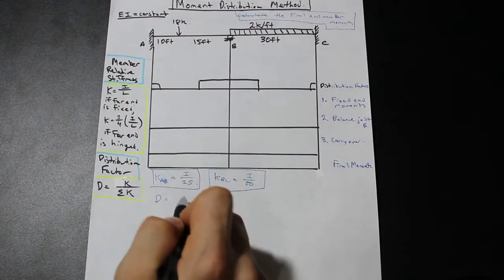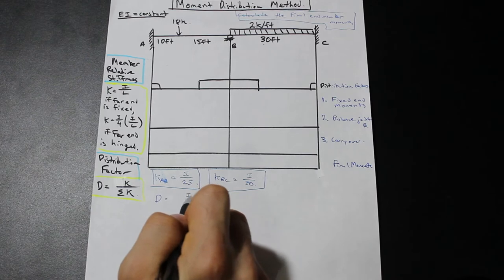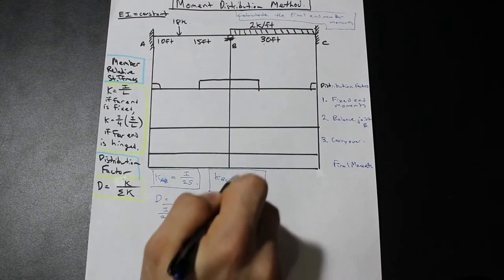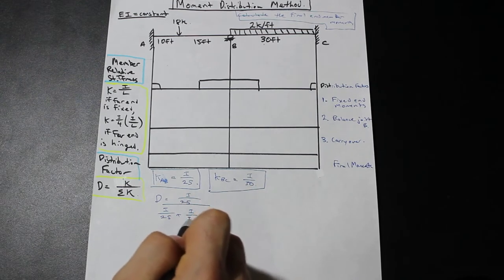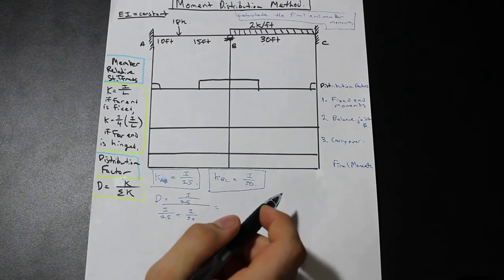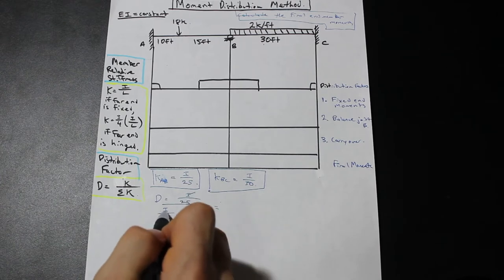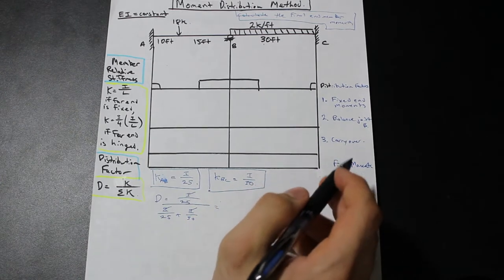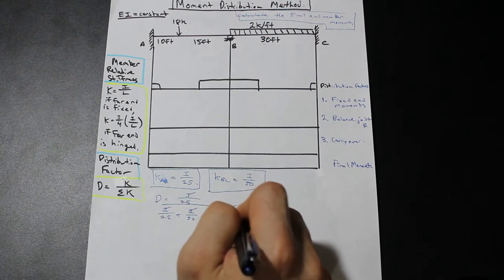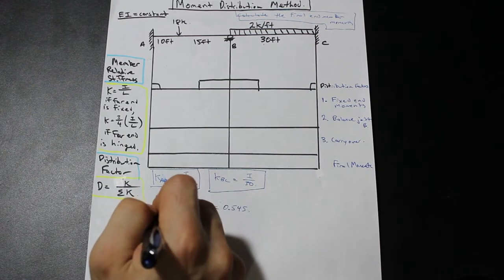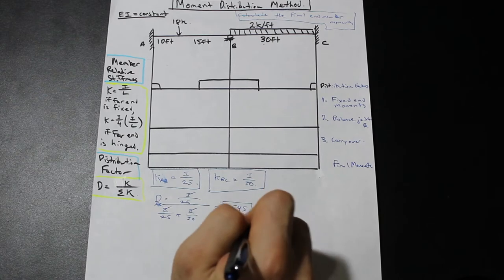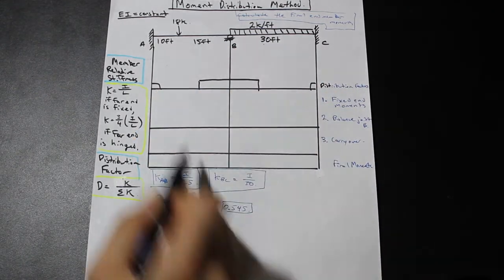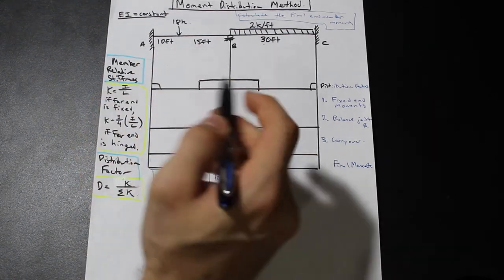So for the left side of B, we have k_AB which is i over 25, divided by i over 25 plus i over 30. Canceling the i's and putting that in your calculator, you get a value of 0.545. That distribution factor is for the left side because we used k_AB on top, and we write that in the boxes here.